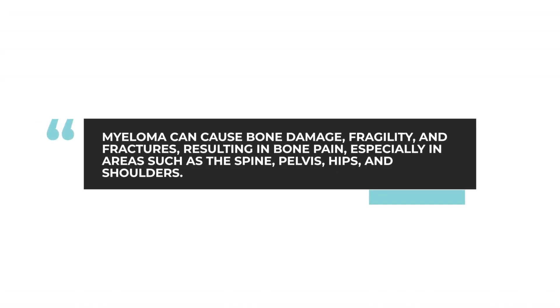Perhaps the most characteristic feature of myeloma is the effect on the surrounding bone. The bone marrow sits within bones, particularly in the spinal area, but also in the pelvic area and around the hips and shoulders. These areas can be impacted such that, as the myeloma cells grow, they can damage the bone, make it fragile, and one can get fractures of the bones. This causes pain in the bones, and pain in the lower back is one of the commoner presenting features of active multiple myeloma.